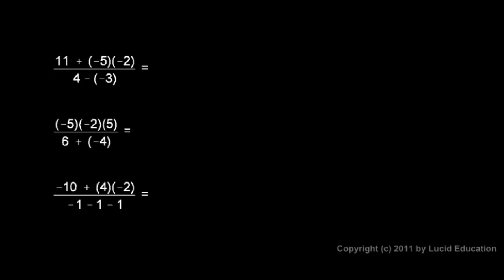In this first example, the numerator is 11 plus negative 5 times negative 2. The multiplication of negative 5 times negative 2 has to be done before the addition. So I'll rewrite the problem: the numerator becomes 11 plus 10, because negative 5 times negative 2 is positive 10.